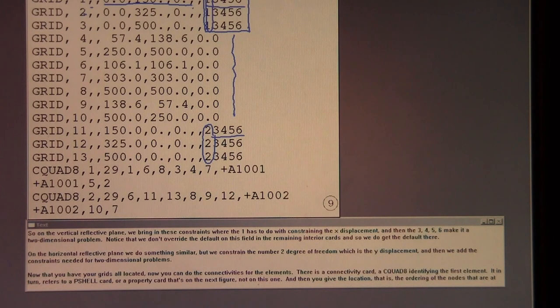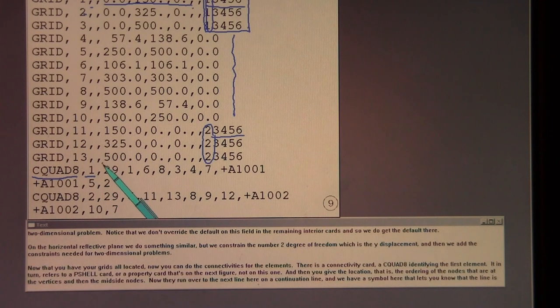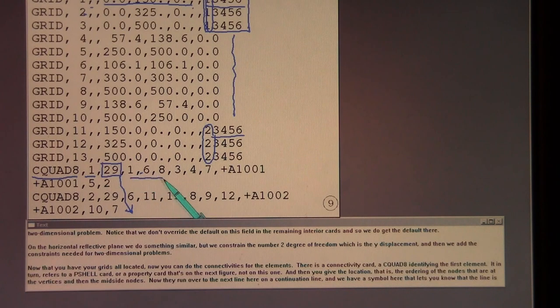Now that you have your grids all located, now you can do the connectivities for the elements. There's a connectivity card, a C quad 8, identifying the first element. It in turn refers to a P shell card or a property card that's on the next figure, not on this one. And then you give the location, that is the ordering of the nodes that are at the vertices, and then the mid-side nodes.